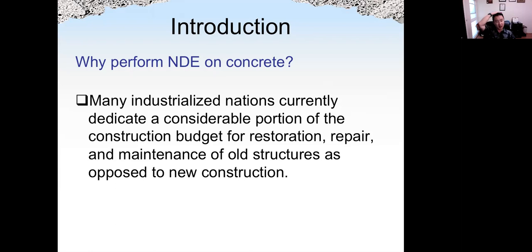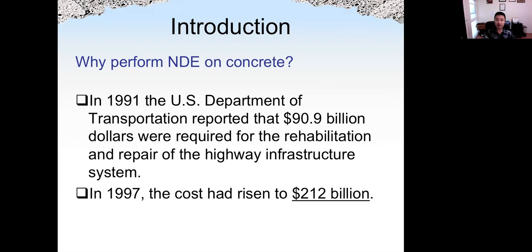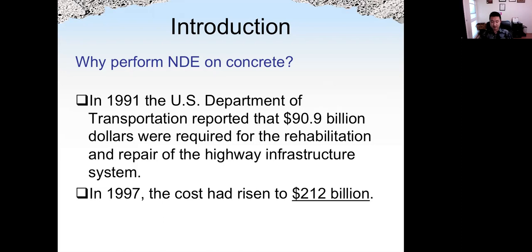In the U.S., about $6 trillion is spent on concrete almost every year. This is an old result, about 30 years ago. In 1991, the U.S. DOT reported that $91 billion was required for rehabilitation and repair of highway infrastructure. Before we do the repair, typically a leak test is required. So in 1997, the cost was revised to $200 billion.